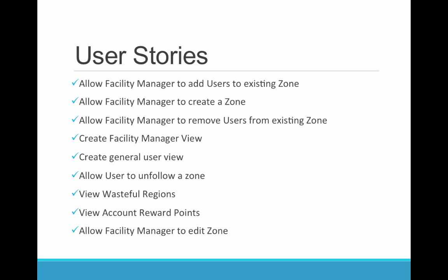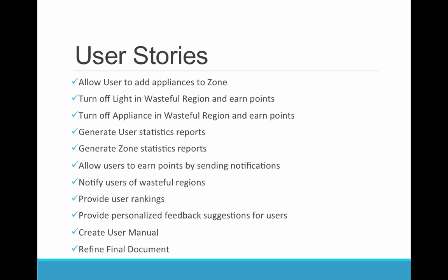Allow Facility Manager to add users to existing zone. Allow Facility Manager to create a zone. Allow Facility Manager to remove users from existing zone. Create Facility Manager view. Create General User view. Allow User to unfollow a zone. View Wasteful Regions, view account reward points. Allow Facility Manager to edit a zone. Allow user to add appliances to a zone. Turn off lights in Wasteful Regions and earn points. Turn off appliance in Wasteful Region and earn points. Generate User Statistics Reports. Generate Zone Statistics Reports. Allow users to earn points by sending notifications. Notify users of Wasteful Regions. Provide User Rankings. Provide personalized feedback suggestions for users. Create User Manual. Refine Final Document.